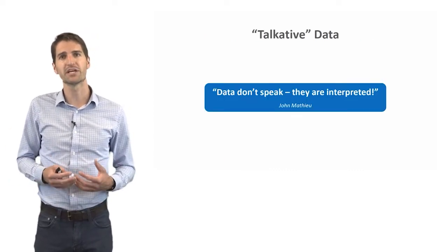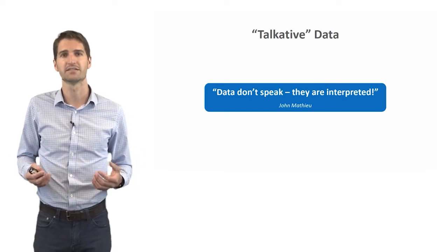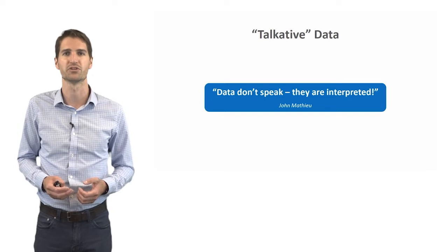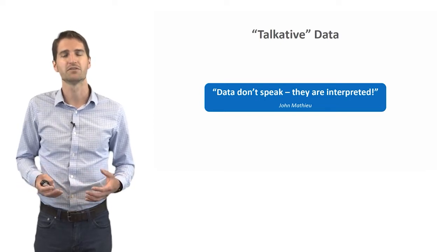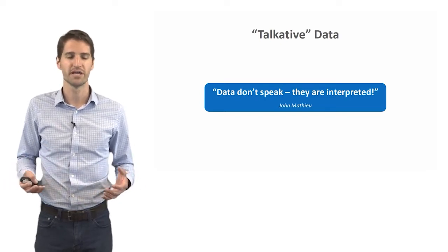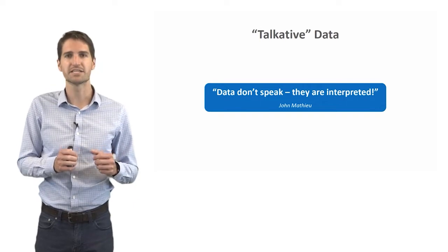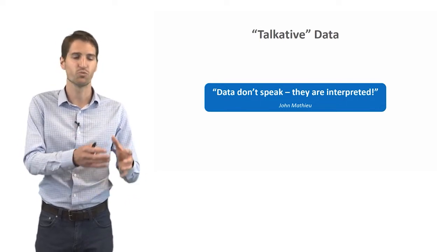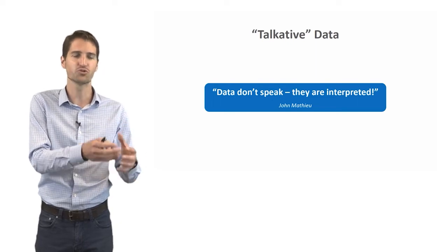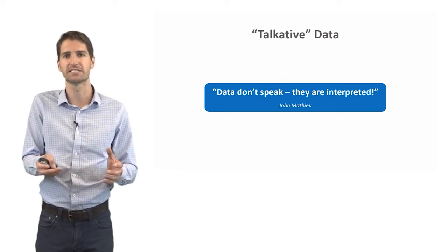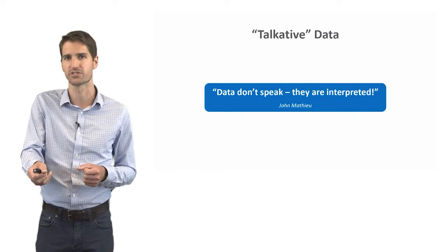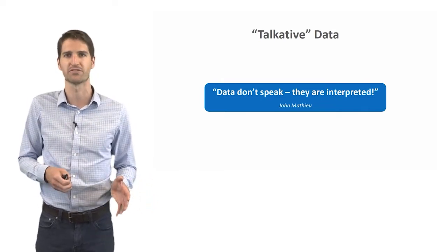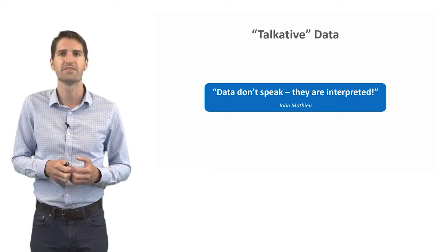Now, another thing to consider when we're thinking about data broadly is that data don't speak, they're interpreted. And this is a quote from John Matthew from the University of Connecticut. Now, this is an important thing to remember. Data analysis and data interpretation involves a human being. And so we need to consider how do we interpret this in some context. The data aren't saying anything to us. We have to look at them very carefully and then make inferences about them and interpret them and then report them outwardly.